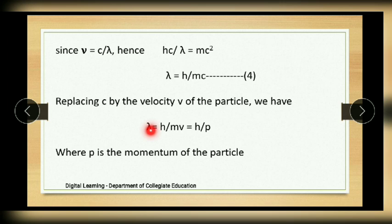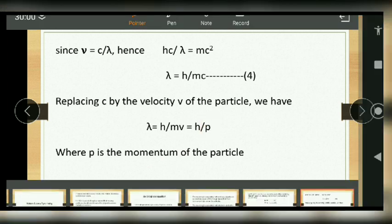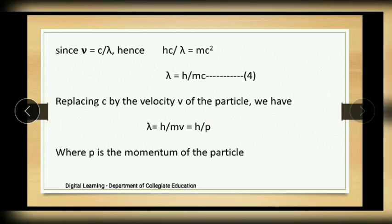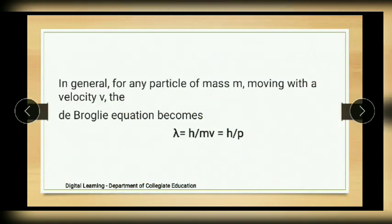So we get λ = h/mv. The product of mass and velocity, mv, gives the momentum p of the particle. Hence λ = h/p. In general, for any particle of mass m moving with velocity v, the de Broglie equation is: λ = h/mv, or equivalently λ = h/p.